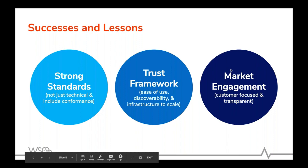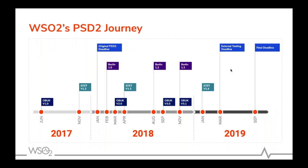Moving on to WSO2's journey through the PSD2 regulation. We started our journey in early 2017 because many of our existing banking customers in Europe were requesting us to assist with their PSD2 compliance requirements. When we looked at the regulation, we realised WSO2 could provide a total solution for compliance since we had all the components a bank would need: API management for exposing APIs, identity and access management for strong customer authentication and consent management, our analytics engine for transaction risk analysis and fraud detection, and an integration platform to integrate with legacy core banking systems.